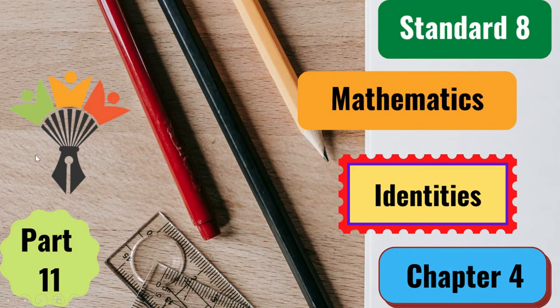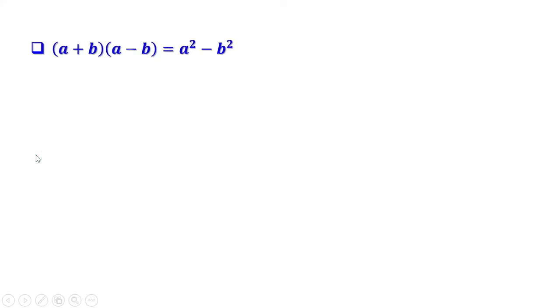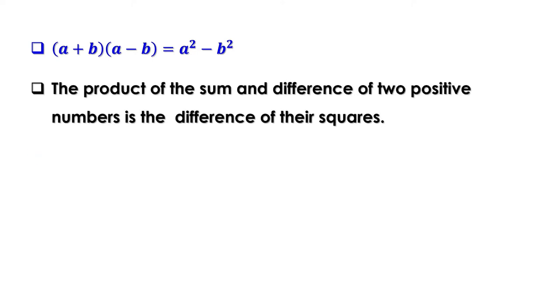Welcome to Maths Companion. Let us recall what we have learned in the last video. We learned that (a + b)(a - b) = a² - b², or the product of the sum and difference of two numbers is the difference of their squares.